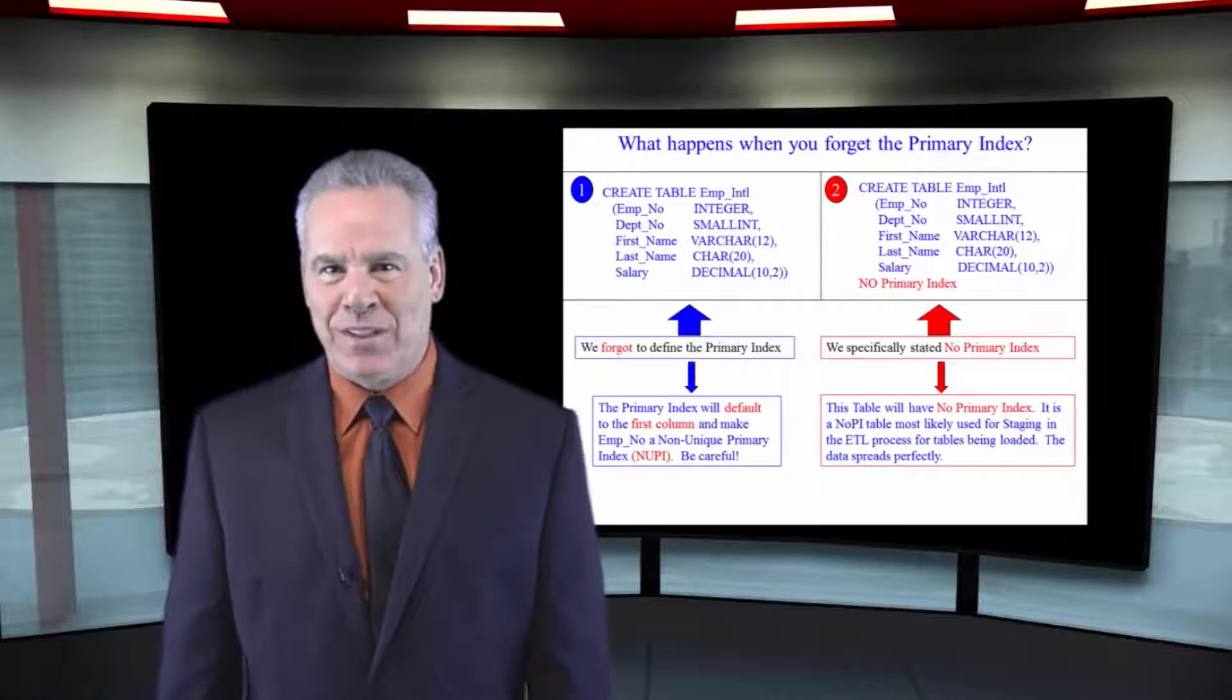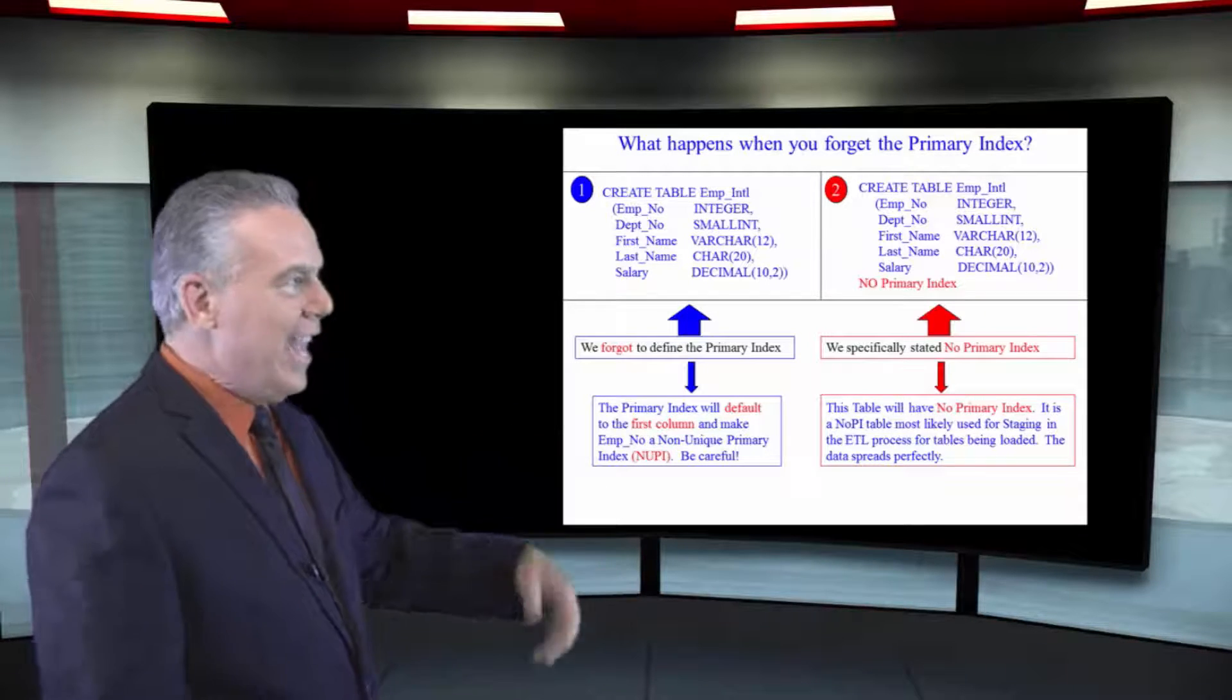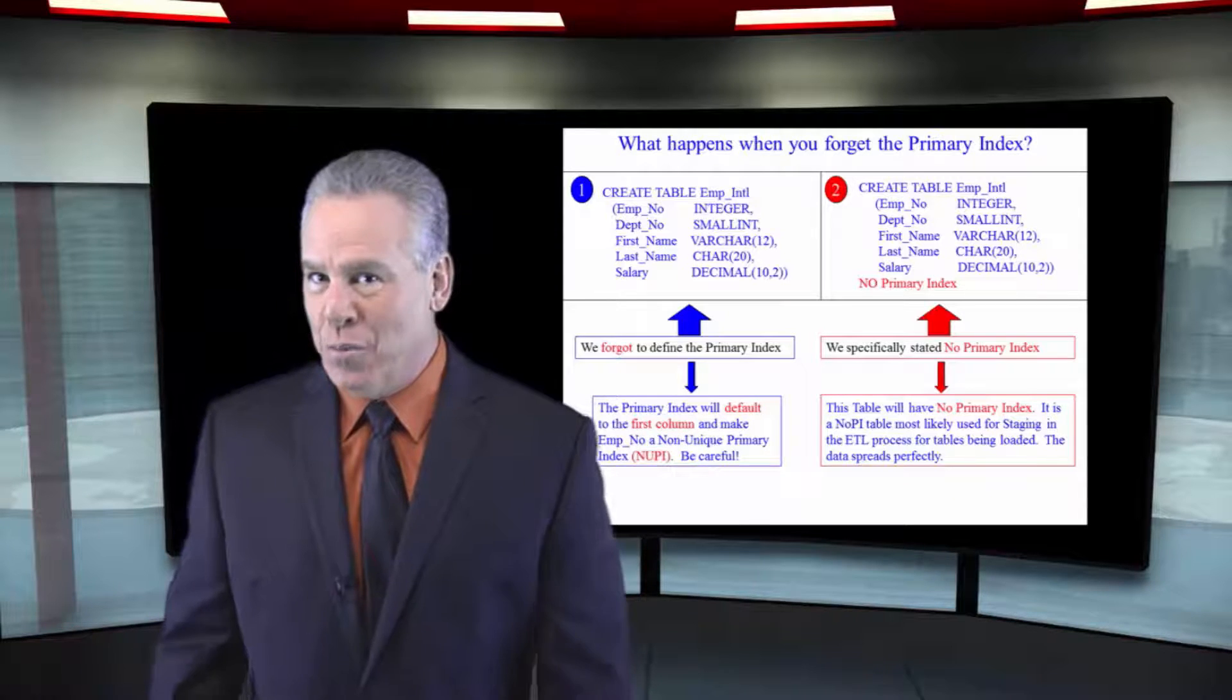Take a look at these two examples. The first one, we forgot to put the primary index on. In the second one, we've got a no primary index, no PI table.